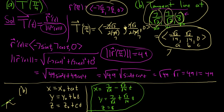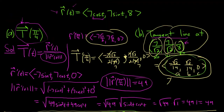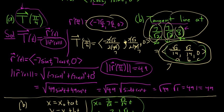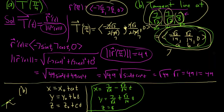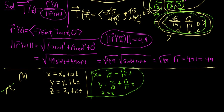Basically, all you do in this problem is use the formula and work through it. Once you have your tangent vector from part a, that gives you a, b, and c, and you use those together with your point and the parametric formulas to find the tangent line.